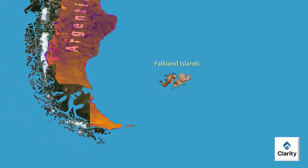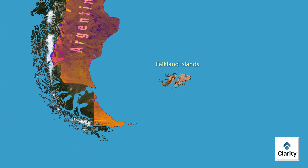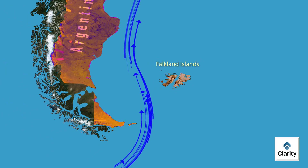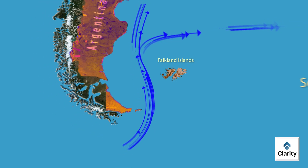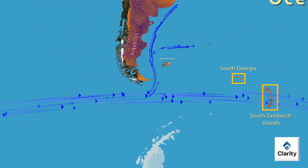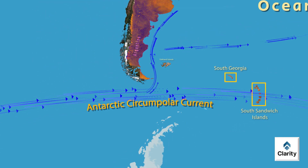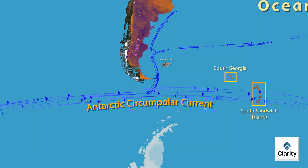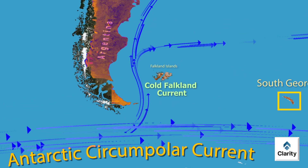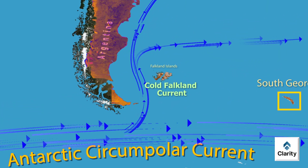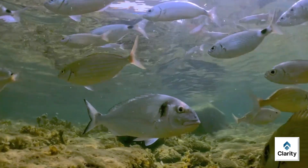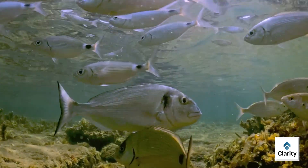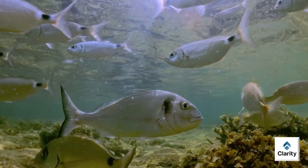Surrounding the Falkland Islands is the Cold Falkland Current. This ocean current flows northward along the coast of Argentina and originates from the Antarctic Circumpolar Current further south. The Falkland Current carries cold, nutrient-rich water, and it significantly influences marine life and climate around the Falkland Islands.